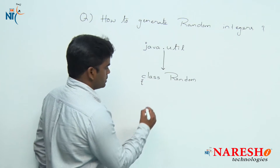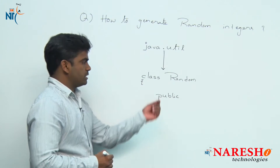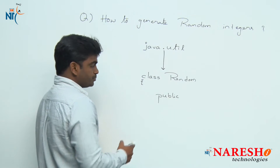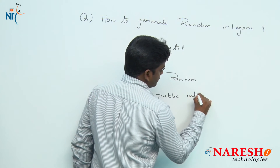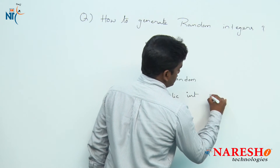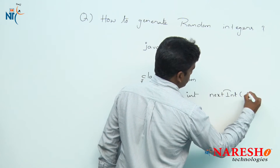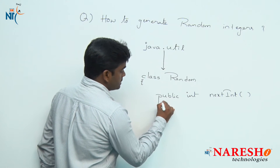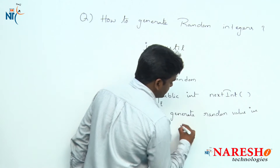So what are those methods? These are public methods, so we can access them from anywhere, and the class is also public. The return type is integer because it will generate a random integer. The method name is nextInt, and it takes no input — it will generate a random value within the integer limits.